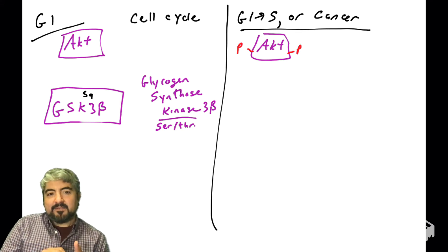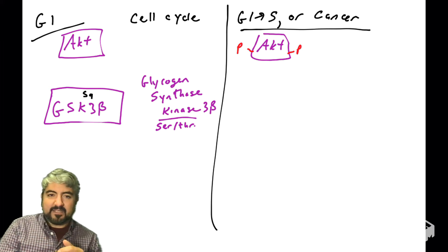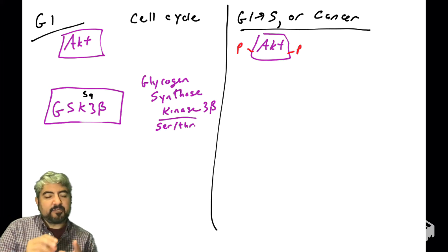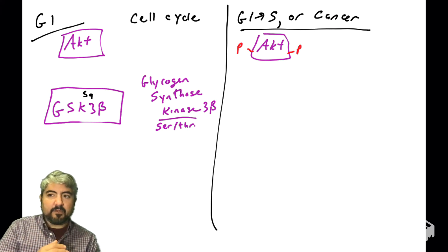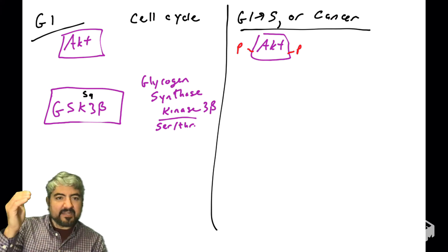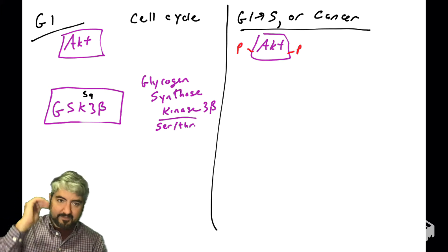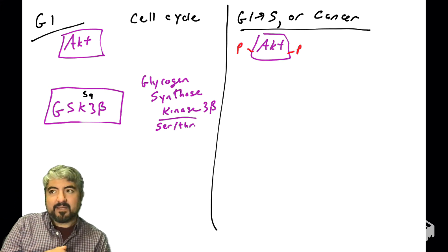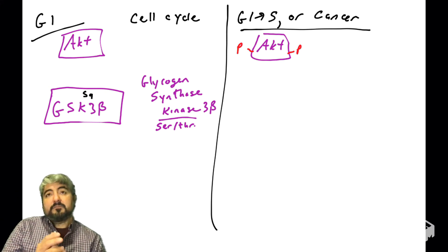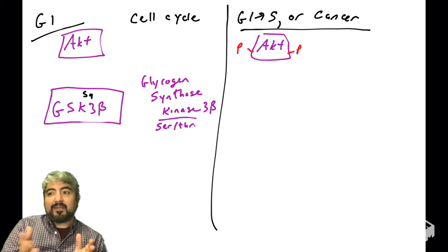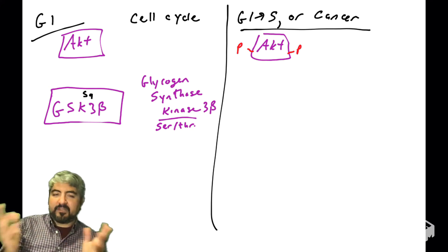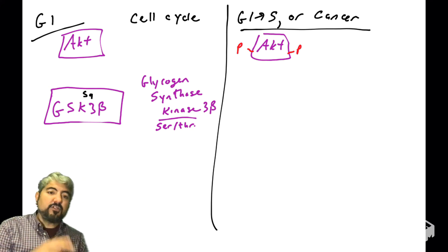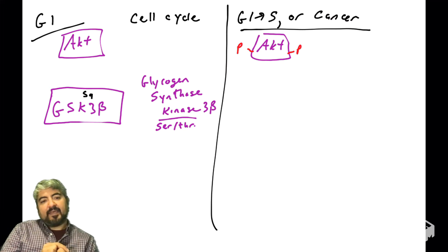GSK3-beta is a kinase — specifically a serine-threonine kinase, which means it phosphorylates its substrates on serines and threonines. So it looks like we have a kinase cascade: AKT, which phosphorylates a downstream kinase called GSK3-beta. GSK3-beta has its own set of substrates, but we're going to focus on two substrates of GSK3-beta.